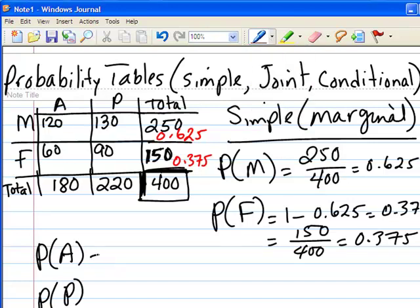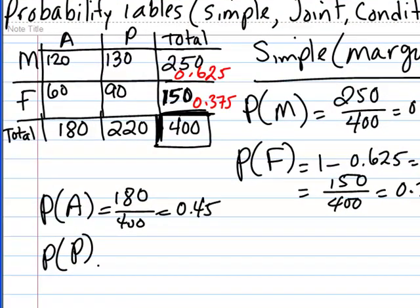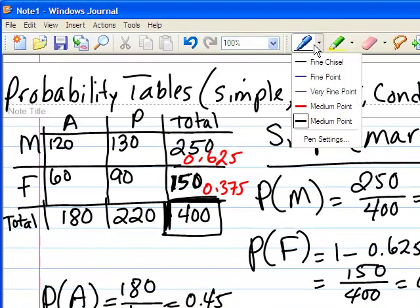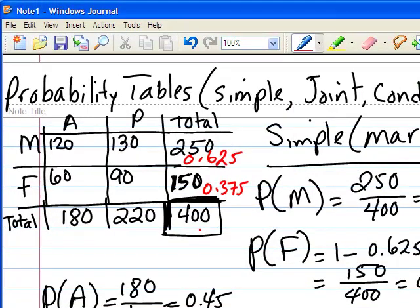Similarly, we can compute the probability of buying a car because of its appearance: 180 divided by 400 gives 0.45. The probability of buying because of performance is 1 minus 0.45, which is 0.55 — also computed as 220 divided by 400. These are the simple or marginal probabilities, written as 0.45 and 0.55 in the margins of the table.